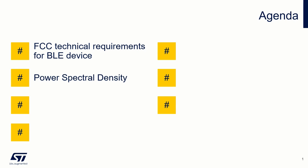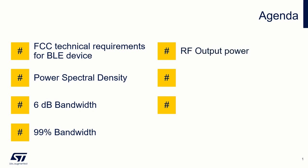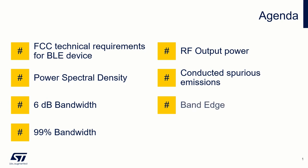Power spectral density is measured, which is the power distributed over unit of frequency band. Furthermore the measurement of 6 dB bandwidth, which expresses whether the signal uses its occupied channel sufficiently. Similarly 99% bandwidth, which is only an auxiliary parameter. The RF output power of the signal and its spurious emissions — these are any unwanted signals coming from the device — are also measured. Last but not least the band edge is also determined, which expresses whether the signal is sufficiently suppressed at the edges of the Bluetooth band so as not to interfere with other adjacent technologies.